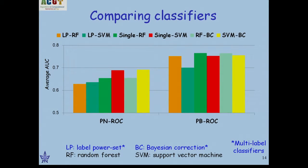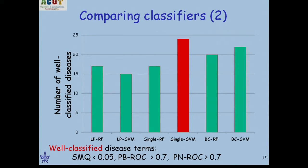When we applied a set of six classifiers, comparing against the background is much easier than comparing against the negatives, so scores are uniformly higher there. Surprisingly, multi-label classifiers did not do better than simpler ones. Looking at the number of well-classified diseases — identified by both scores above 0.7 and Q-value below 0.05 — the simple SVM classifier was best, so we went with it for the rest of the analysis.